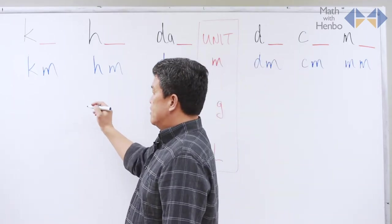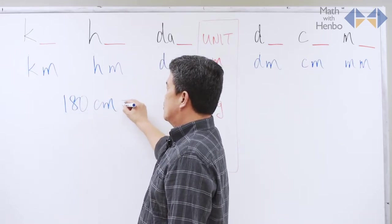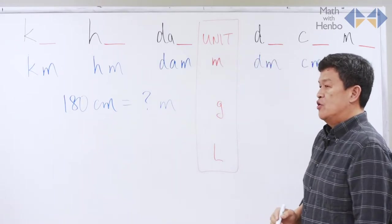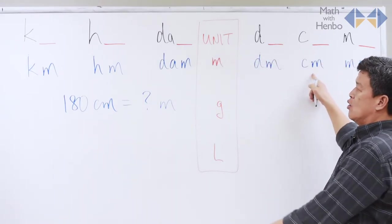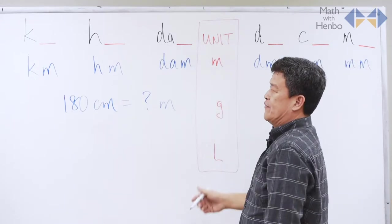Now, to solve it, I'll give you an example. I am 180 centimeters tall. If I want to convert that into meters, all I need to do is locate the given and go to the one I want to convert to. Here, I'm making two jumps to the left.